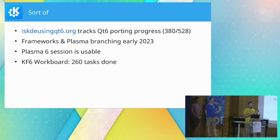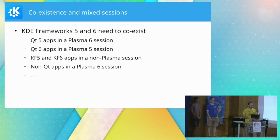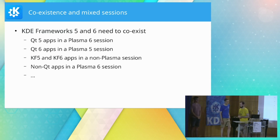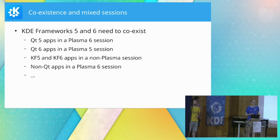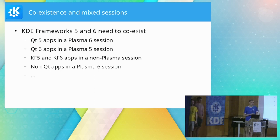We still have a few items on the workboard left — the done column has about 260 tasks out of around 400. But again, don't read this as a progress indicator because some of them are more organizational than actionable, and some are more optional wish-list items. There are still a few challenges ahead before we can think about releasing a 6.0, and Volker is going to tell you all about them.